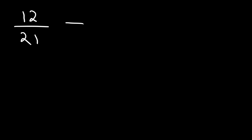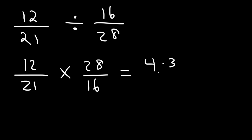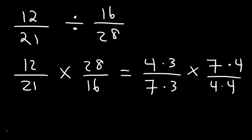Now let's try an example with large numbers: 12 over 21 divided by 16 over 28. Using keep-change-flip, let's keep the first fraction the same, change division to multiplication, and flip the second fraction. When multiplying two fractions with large numbers, it's better to simplify before you multiply. We can rewrite 12 as 4 times 3, and 21 as 7 times 3. Then 28 as 7 times 4, and 16 as 4 times 4. So we can cancel a 7, cancel the 3, cancel a 4, and cancel another 4.